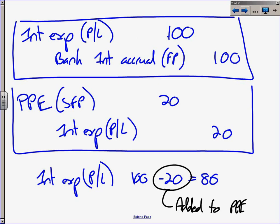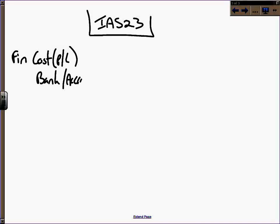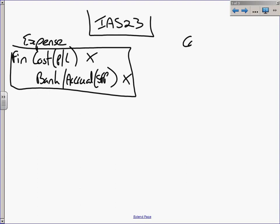If we look at the standard on a page, we have IAS 23, all about borrowing costs that need to be capitalized. The normal treatment is debit finance costs in profit or loss and credit your bank or interest accrual in the statement of financial position. That's how we've always dealt with interest and finance costs.